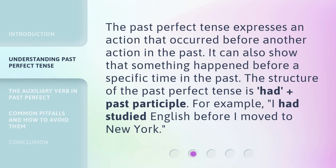The past perfect tense expresses an action that occurred before another action in the past. It can also show that something happened before a specific time in the past. The structure of the past perfect tense is: had + past participle. For example, "I had studied English before I moved to New York."